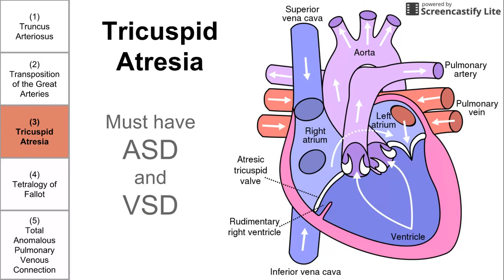Next we have three, which helps us remember tricuspid atresia. It has to do with the tricuspid valve, except we don't have a tricuspid valve. Instead of a valve, we have a wall. Tricuspid atresia is the tricuspid valve being replaced with a solid wall that you cannot get past. This means that in order for the blood to complete a circuit, you have to have both an atrial septal defect and a ventricular septal defect. Blood needs to flow into the right atrium from the superior vena cava, through to the left atrium through an atrial septal defect, down into the left ventricle, and then back to the right ventricle through a ventricular septal defect. We need both septal defects for somebody with this condition to survive.